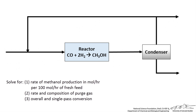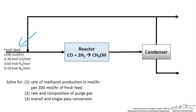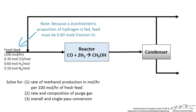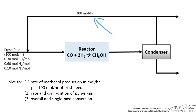Here is the process with the reaction written in the reactor. We are told it is carbon monoxide and hydrogen to form methanol. Using stoichiometry we can figure out there should be 2 moles of hydrogen per mole of carbon monoxide. We have 100 moles per hour of fresh feed: 30 mole percent carbon monoxide, 60 mole percent hydrogen, and 10 mole percent nitrogen. The recycle is 3 moles per mole of fresh feed, and the recycle stream composition is 25 mole percent nitrogen.